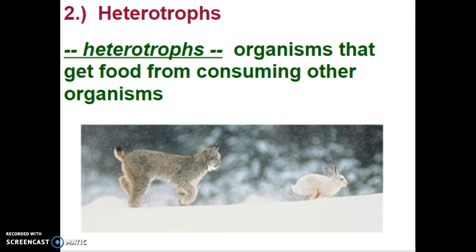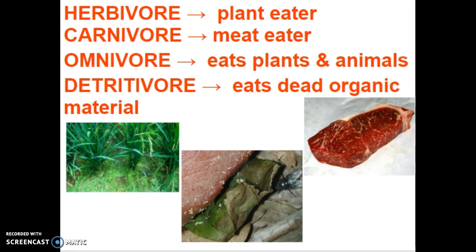Heterotrophs are everything that isn't an autotroph — organisms that get food from consuming other organisms. Heterotrophs can also be called consumers. We have herbivores, or plant eaters, which are often called primary consumers or first-level consumers. Carnivores are our meat eaters, also called second-level consumers. And omnivores — omni is a Latin root meaning all — so omnivores eat both plant and animal material. Most often in an ecosystem, omnivores are considered tertiary or upper-level consumers.